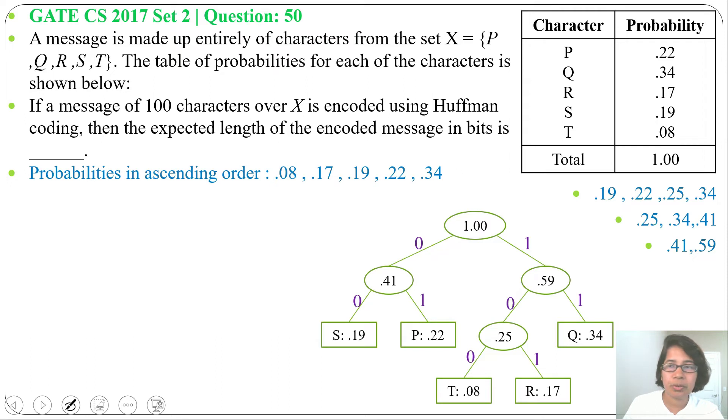Now we will find the prefix code for every character. P prefix code is 01 and code length is 2. Next, Q prefix code is 11 and code length is 2.